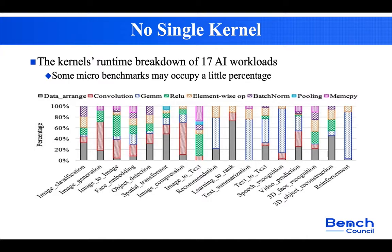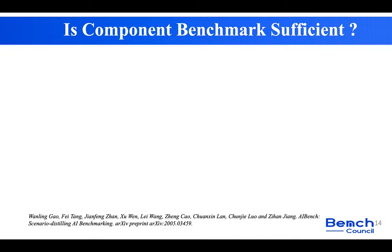For example, face embedding workloads occupy almost the same percentage across kernels, so using only one kernel is not enough. There are many existing benchmarks that adopt component benchmarks, providing a task-level AI model implementation like image classification. However, our experiments also show its potential for misleading conclusions.